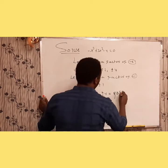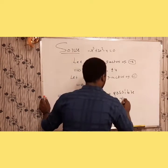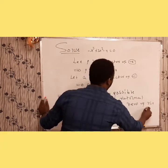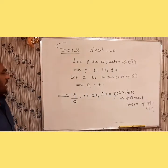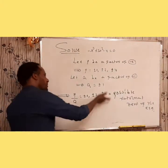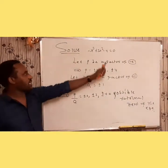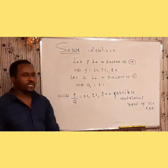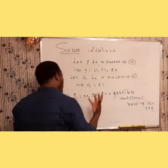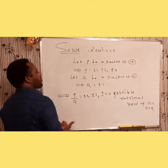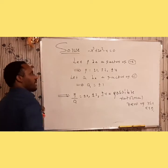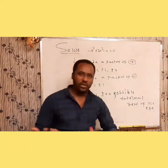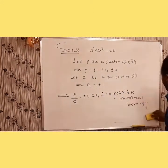These are the possible rational zeros of this equation. So we have eight different possible rational zeros. To detect which of these numbers are the actual real zeros, we'll use the synthetic division method — a very simple and interesting method of finding the zero of any polynomial equation.